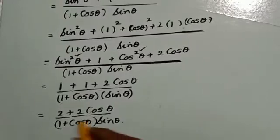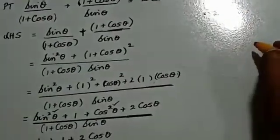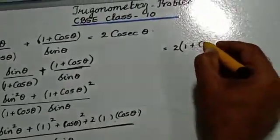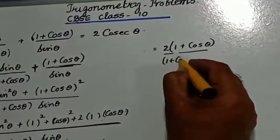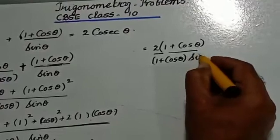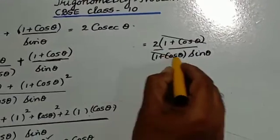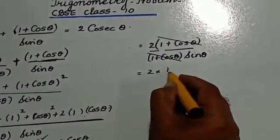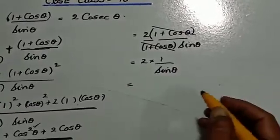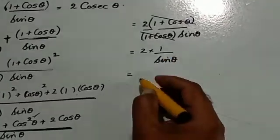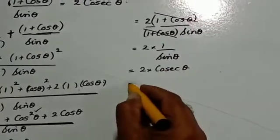From the numerator, remove 2 as a common factor — this leaves 1 plus cos theta. The denominator is 1 plus cos theta into sin theta. Now, 1 plus cos theta in the numerator mutually cancels with 1 plus cos theta in the denominator. You will have 2 into 1 divided by sin theta. And 1 by sin theta is nothing but cosecant theta, so 1 by sin theta is replaced as cosecant theta — and that is the right hand side.